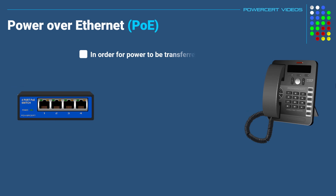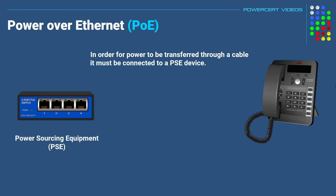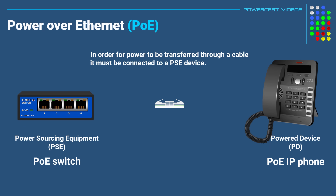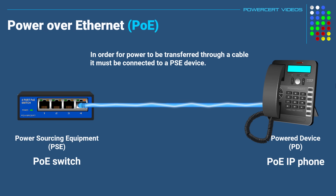In order for data and power to be transferred through this cable, it must be connected to a power sourcing equipment, or PSE, device. A PSE device supplies data and DC power to a power device, or PD, using an ethernet cable. In this example, our PSE device is a PoE switch, and our power device on the other end is a PoE IP phone. When we plug an ethernet cable into this switch, the switch will send data and power through the cable to the phone, so there's no need for the IP phone to have a separate cable for power.